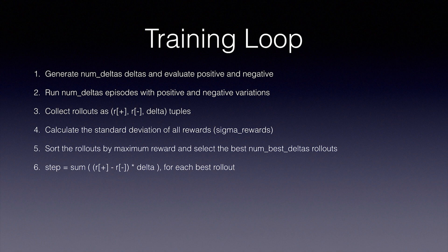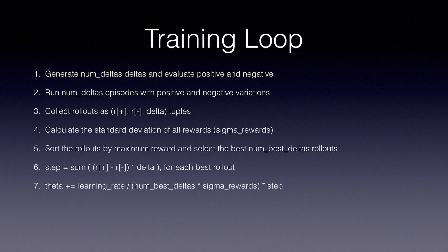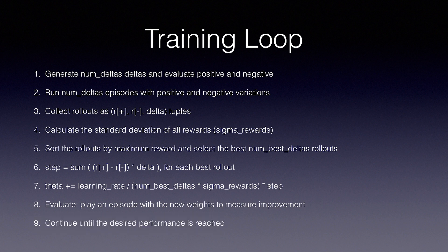Now, theta equals theta plus our learning rate divided by the number of best deltas times the standard deviation of the rewards times the step value we calculated. Next, we're going to do an evaluation. We play an episode with the new weights and see how we did and print the score. Then we continue until the desired performance is reached or the rewards stop improving.